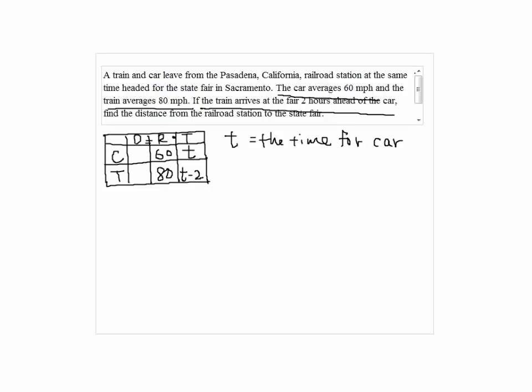Now, distance-wise, we can find by multiplying rate by time, so the distance for the car will be 60T, and distance for the train will be 80 times T minus two.